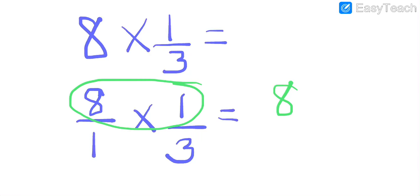And then we're going to multiply the denominators. So those are the numbers in the bottom. So let's circle those so you can see them. One times three. Excellent. So we're going to draw that, and you can see we have a fraction called eight thirds.